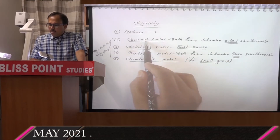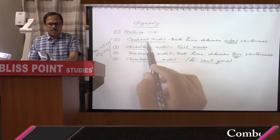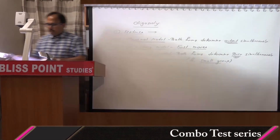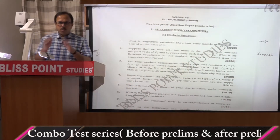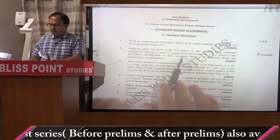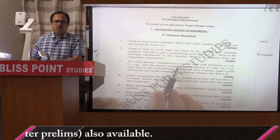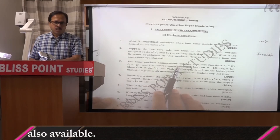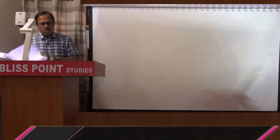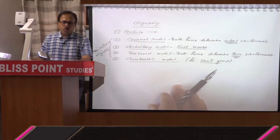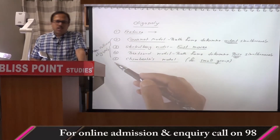From the Cournot model you are getting multiple questions in different years. In 2020 itself, the first question was on conjectural variations, the second was on Bertrand, and the third was on Cournot — all three questions were from the oligopoly section. Usually you find two to three questions at least from oligopoly: at least one from the non-collusive section and one from the collusive section.